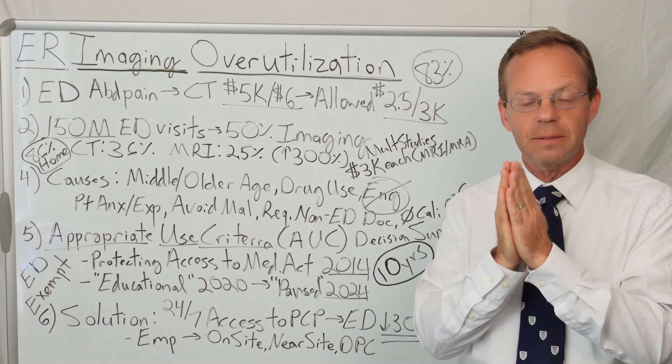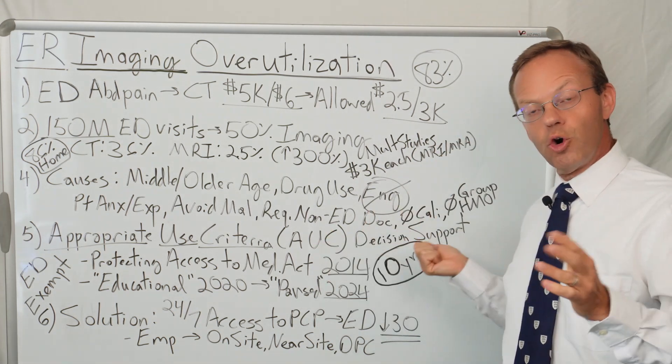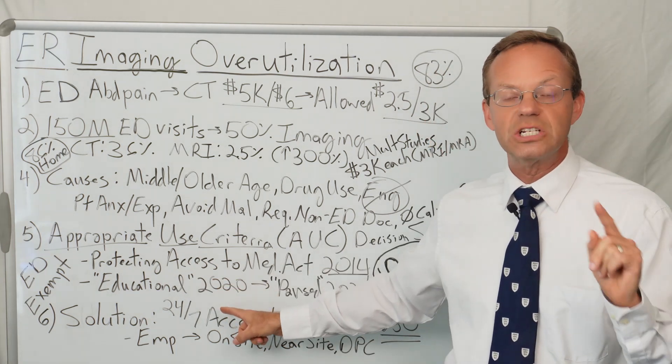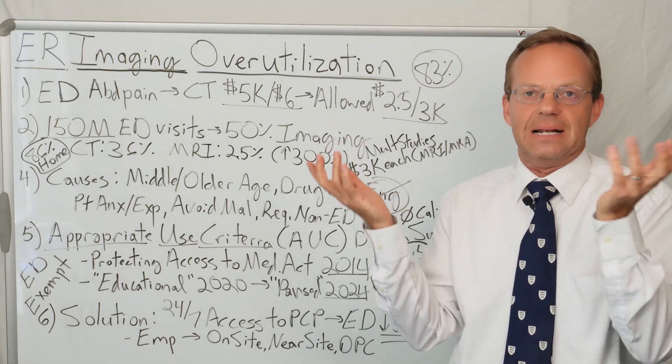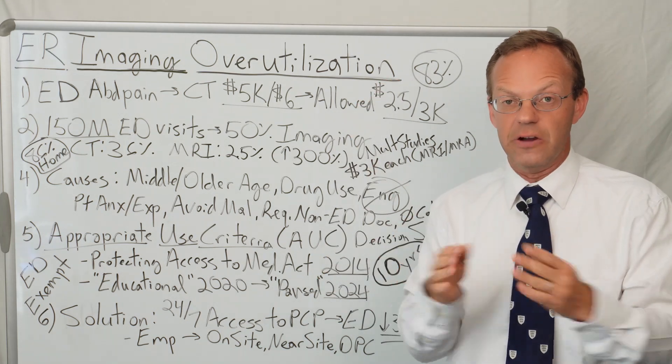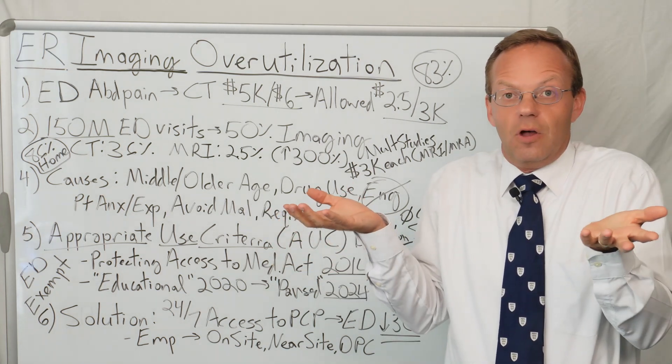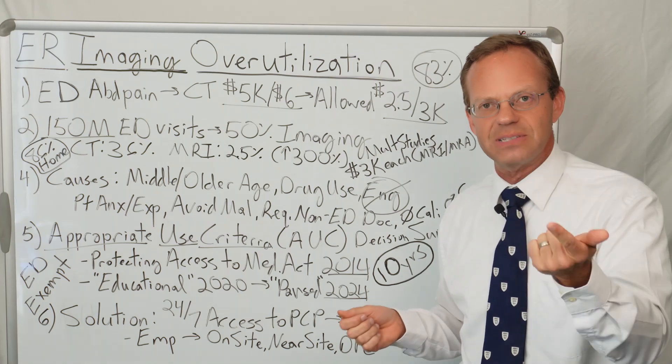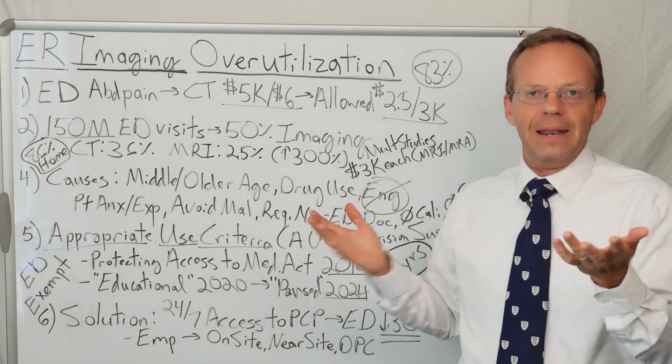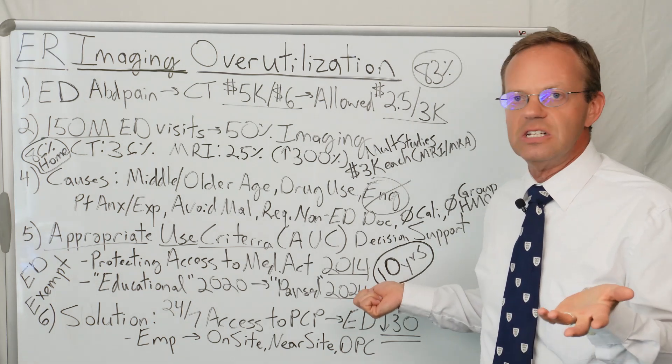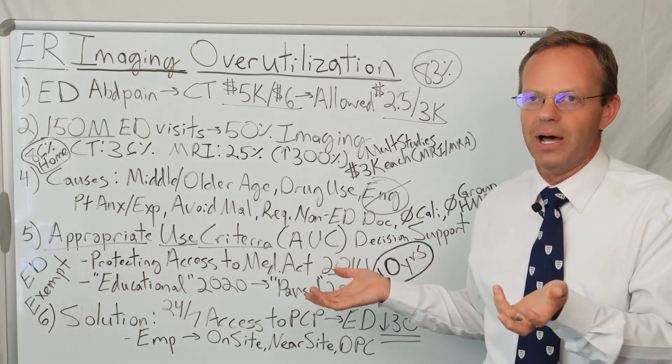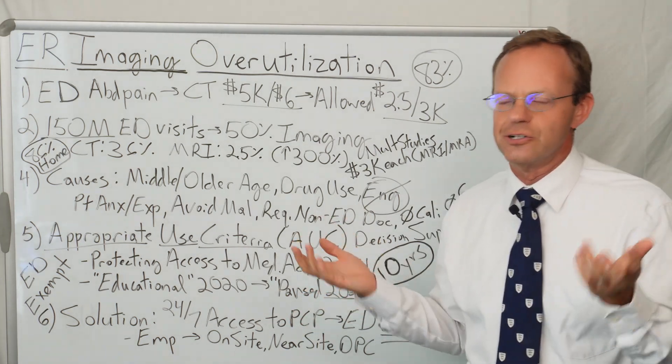This was actually put into law by the Protecting Access to Medicare Act of 2014. So Congress put into place and the president signed a law saying that they were going to require doctors to use appropriate use criteria when ordering MRIs and CT scans. Guess what happened? It took six years up until 2020 just to make it an educational program, just to give feedback to the doctors as to whether or not the scans they were ordering were appropriate or not. There was no financial penalty associated with it. And then just this year in 2024, they paused the entire program. So you mean to tell me it took 10 years? Congress passed, the president signed a law, and basically CMS couldn't implement it for 10 years, and so they're like, forget it. And again, I'm not blaming one particular administration. This happened under both Democrat and Republican administrations. So just know that from a health policy perspective, that's not necessarily a great tool for changing healthcare because you can change the policy, but just because you change the policy doesn't mean it's implemented. In this case, it took 10 years and they still couldn't implement it.